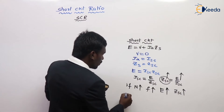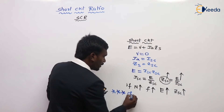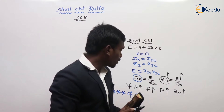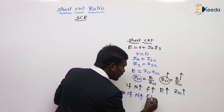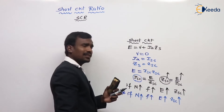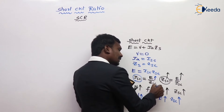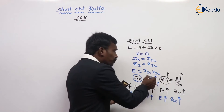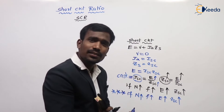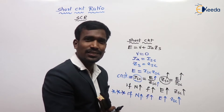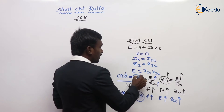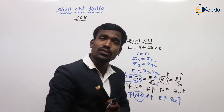Very, very important: if speed increases, what happens to short-circuit current? If speed increases, frequency increases. When frequency increases, EMF increases and impedance increases — exactly the same level. If both increase equally, then ISC remains constant. ISC remains constant; there is no change. So if speed increases, the short-circuit current is constant — there is no change in short-circuit current.